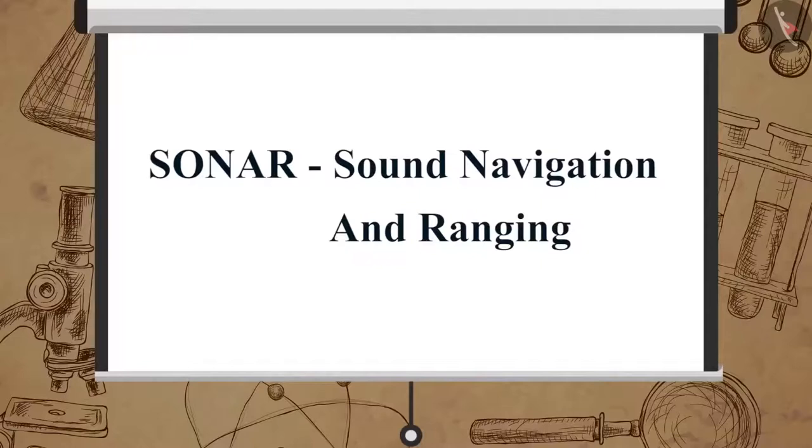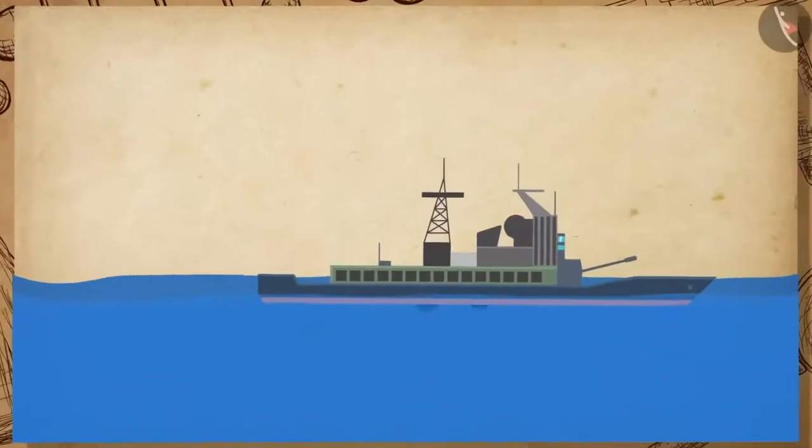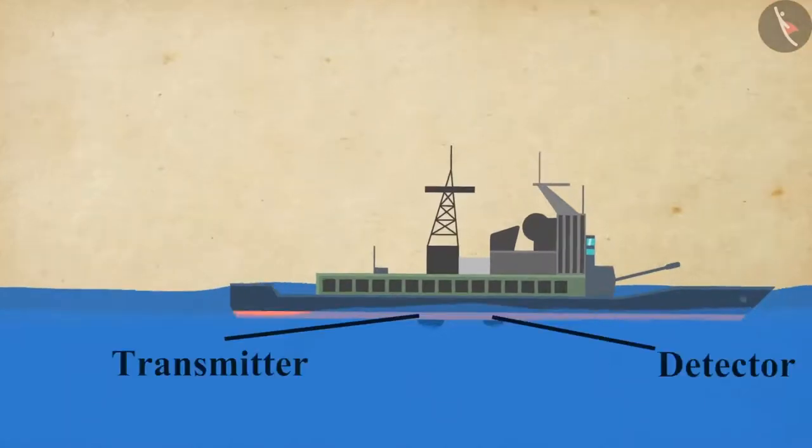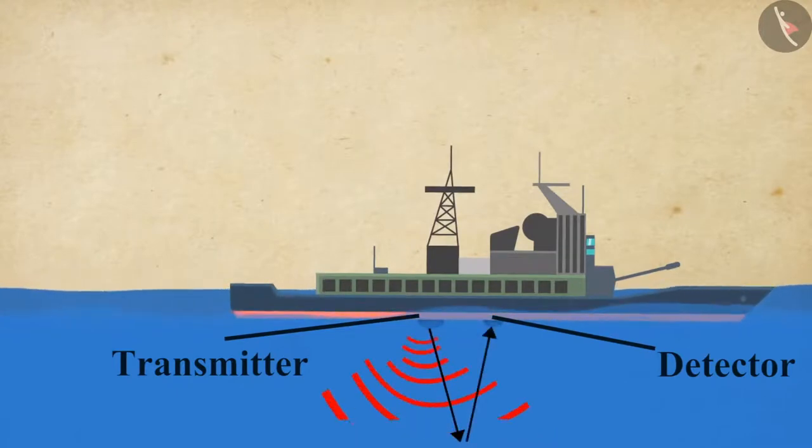Sonar stands for Sound Navigation and Ranging. The device consists of a detector and a transmitter, and it is installed in a boat or a ship. The transmitter produces and transmits ultrasonic waves. These waves strike the objects on the seabed and get reflected back to the device, which is then sensed by the detector.